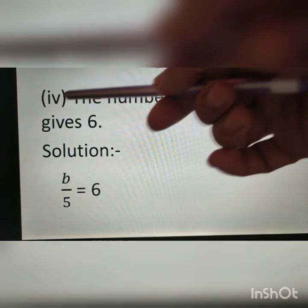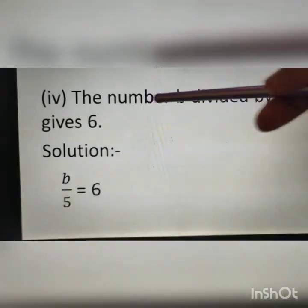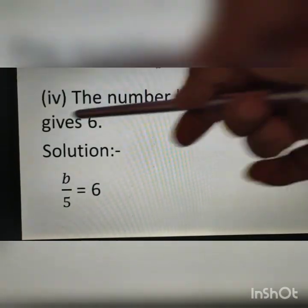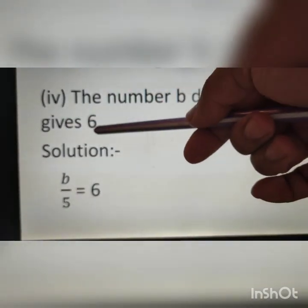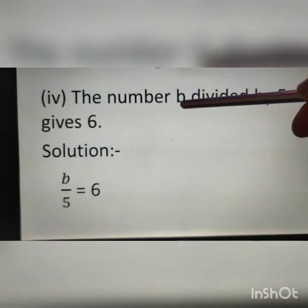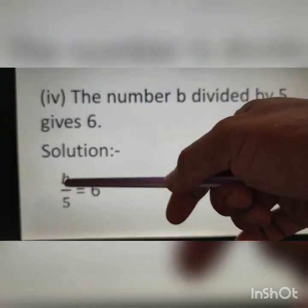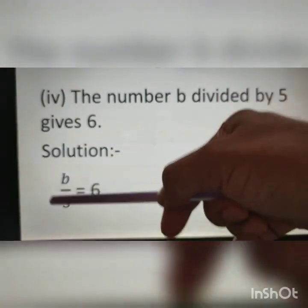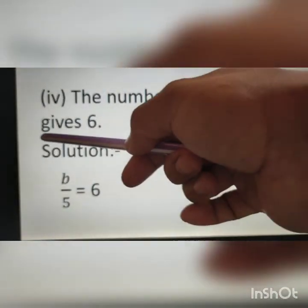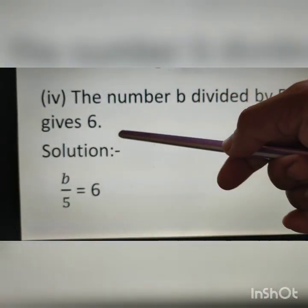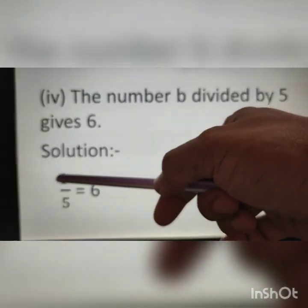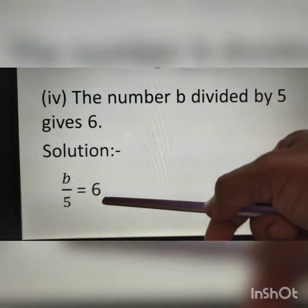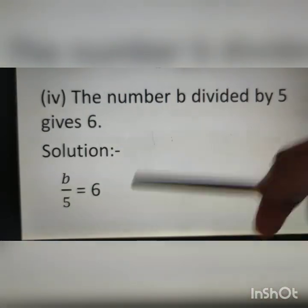Fourth question: the number b divided by 5 gives 6. B divided by 5 — the solution is b divided by 5 gives 6. Therefore, b divided by 5 is equal to 6 is the equation.